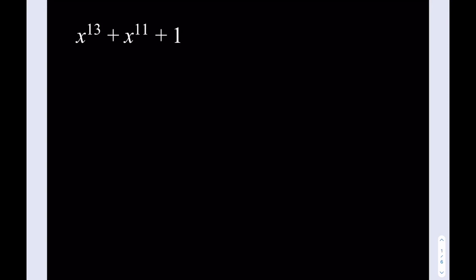Hello everyone. In this video we're going to be factoring a giant polynomial. Now why did I call that giant? It only has three terms, right? Well, because of the 13th power that we have here. We have to deal with this. This is not a standard polynomial — it's not like a difference of two squares or difference of two cubes or something like that. It's not very standard. So we're going to use a non-standard approach. That's what makes this problem more interesting.